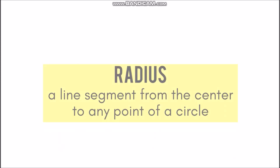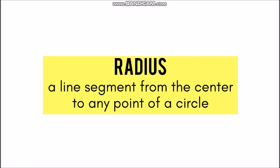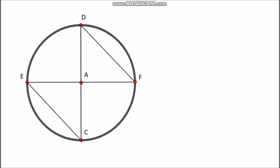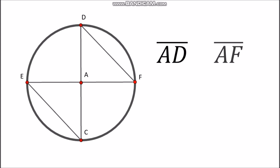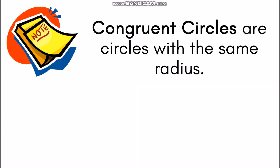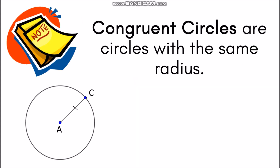There are also different parts of the circle. Let's start with the radius. Radius is a line segment from the center to any point of a circle. In this example, the radii are segment AD, segment AF, segment AE, and segment AC. Notice that one endpoint of the radius is the center and the other one is on the circle.